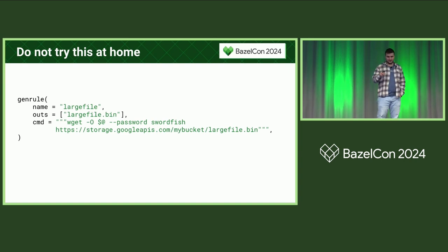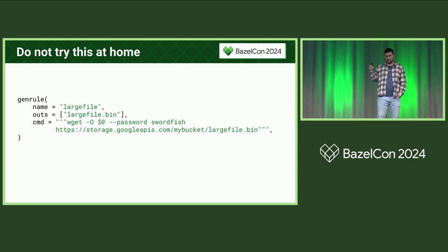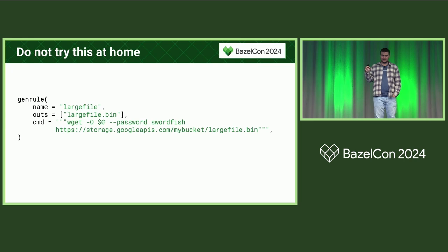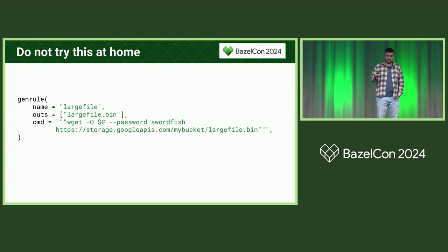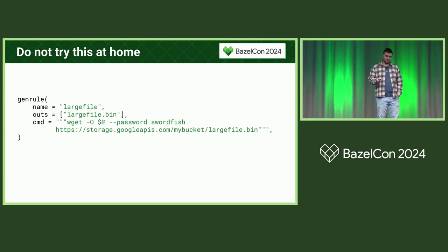First of all, if you do this, Bazel doesn't know that this gen_rule accesses the internet. So if you try to vendor your files using the Bazel vendor command or the Bazel fetch command, these files will not be available offline. Second of all, the password here is hard-coded, so you probably don't want to do this. There are better ways.